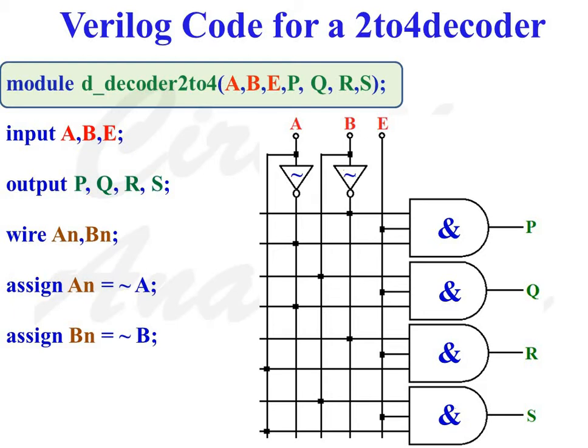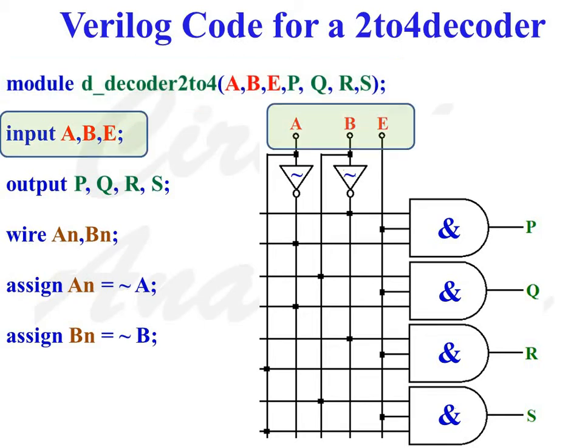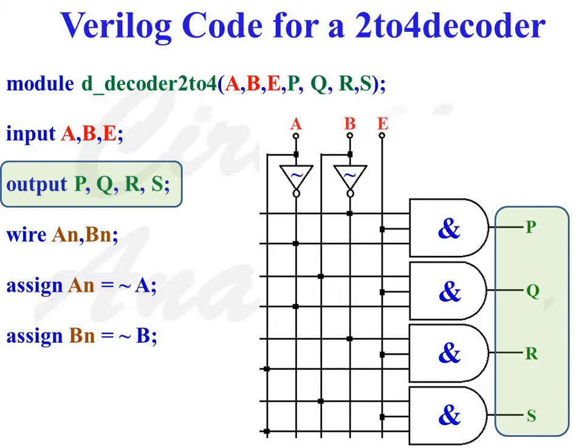Now let us discuss the Verilog code for a 2-to-4 decoder in dataflow style of modeling. The first line, module D_decoder_2to4 (A, B, E, P, Q, R, S); defines that the module is named D_decoder_2to4 with ports A, B, E, P, Q, R, and S. The line input A, B, E; defines that A, B, and E are input ports. The line output P, Q, R, S; defines that P, Q, R, and S are output ports.